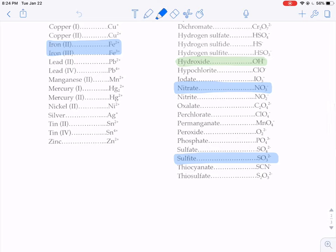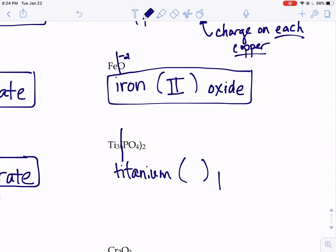It's right here on the right-hand side. PO4 is called phosphate. Phosphate has the charge of negative three. So, I'm going to write phosphate. We know that phosphate has a charge of negative three. There's two of them.